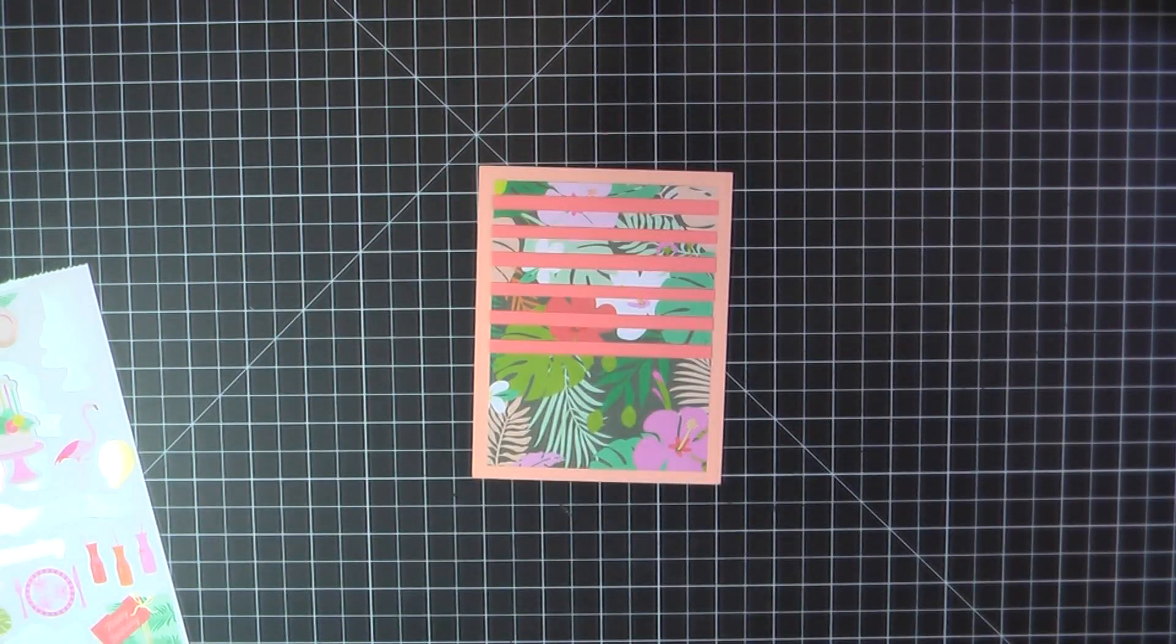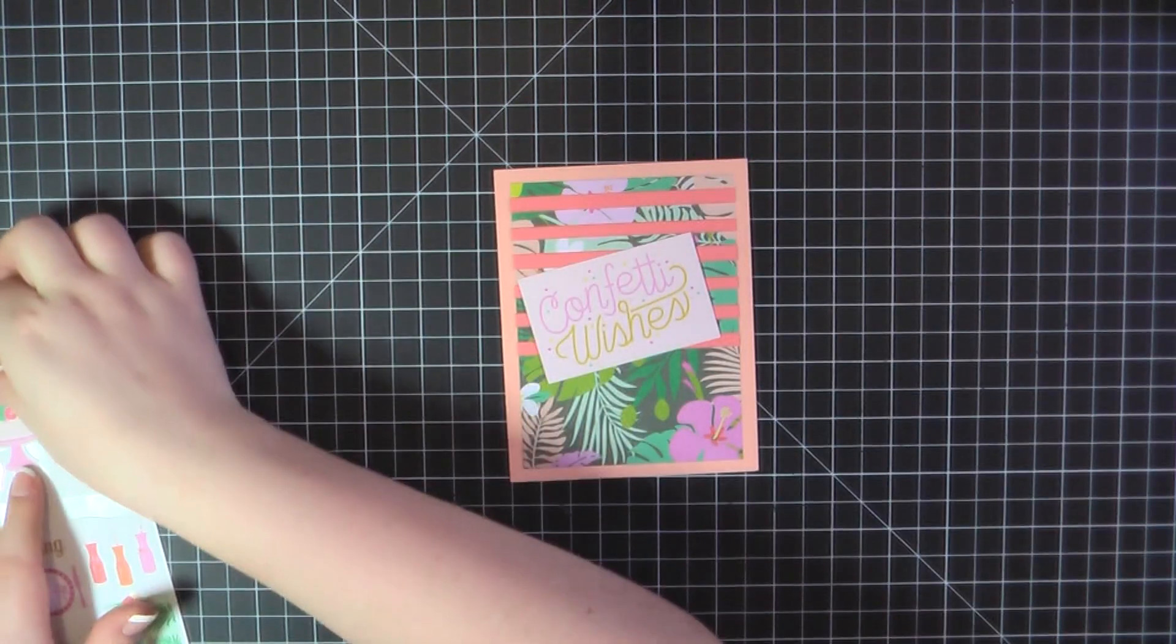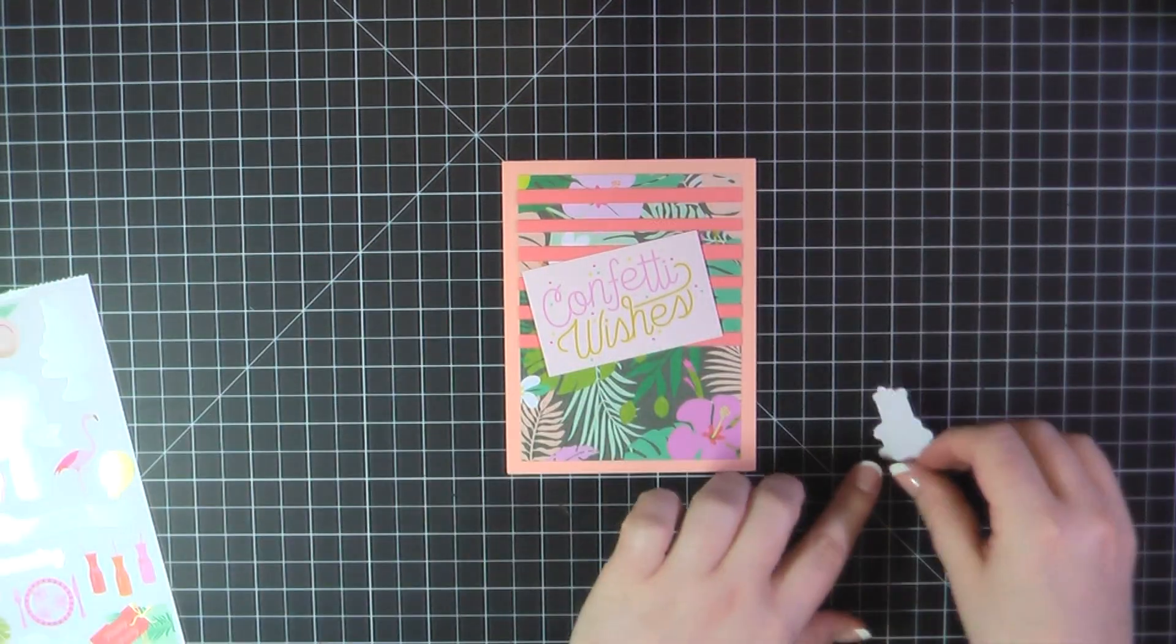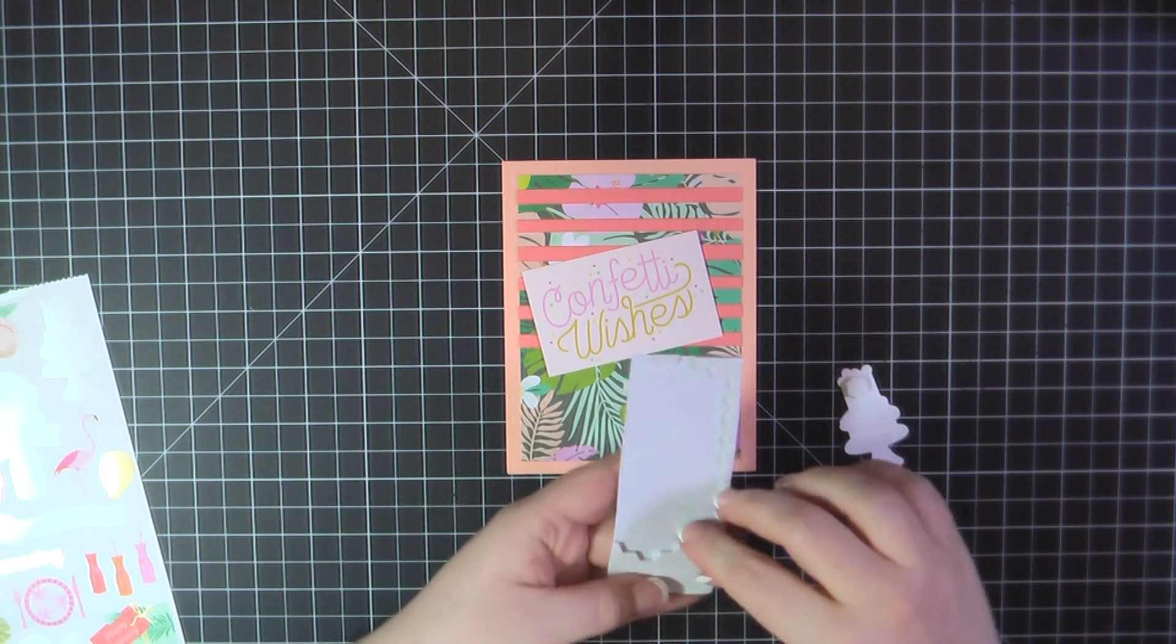I'll add some ATG to the back and then place that panel here on the top of my card base. And this card base is made from MFT's Peach Bellini cardstock. I'm going to use another one of those cut aparts for the sentiment. And I've also grabbed in one of the ephemera pieces with this really cute little cake. I'm going to pop that up with some foam dots.